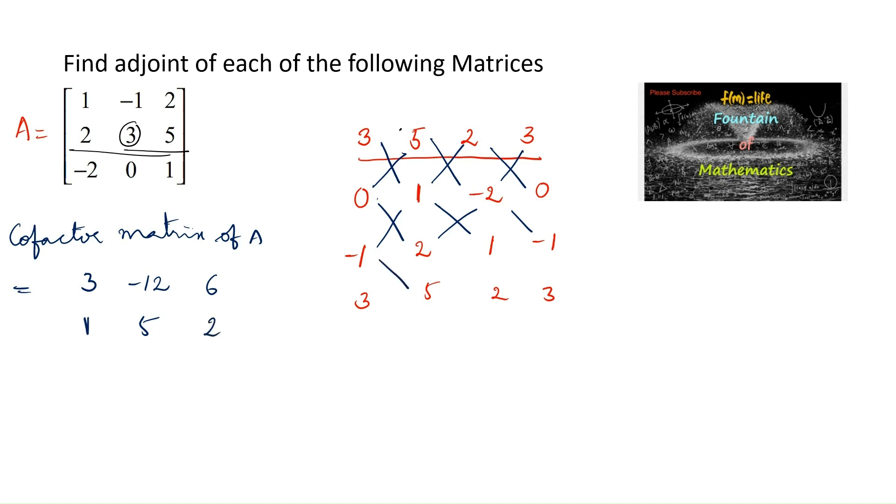Next, -1 times 5 is -5, -5 minus 6 is -11. 2 times 2 is 4, 4 minus 5 is -1. And 1 times 3 is 3, 3 plus 2 is 5. This is the cofactor matrix.